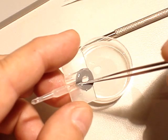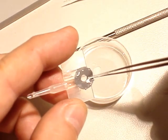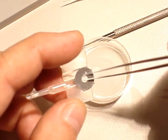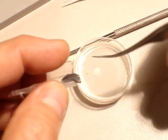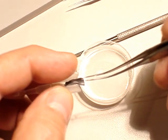Then we take the lens at the halfway point, then we just bend the lens in its own cassette.